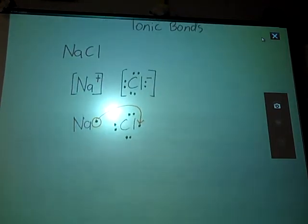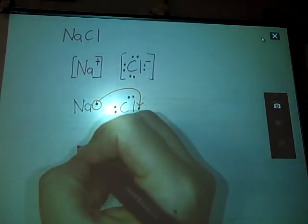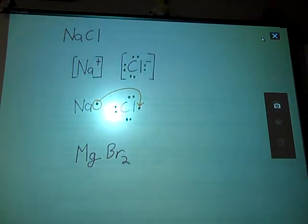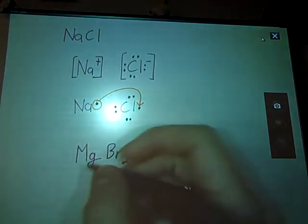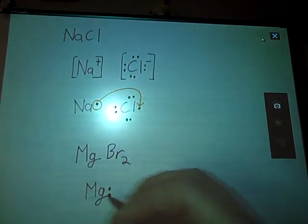If you were to have a substance that involved more than two atoms, for example, magnesium bromide, MgBr2, our magnesium, we'll do the Lewis dot structure for him first. That's one of our scenarios where magnesium's valence electrons are only in the s orbital, so he has two.